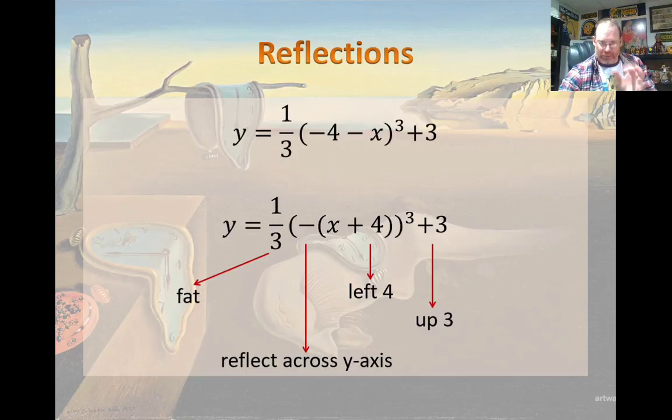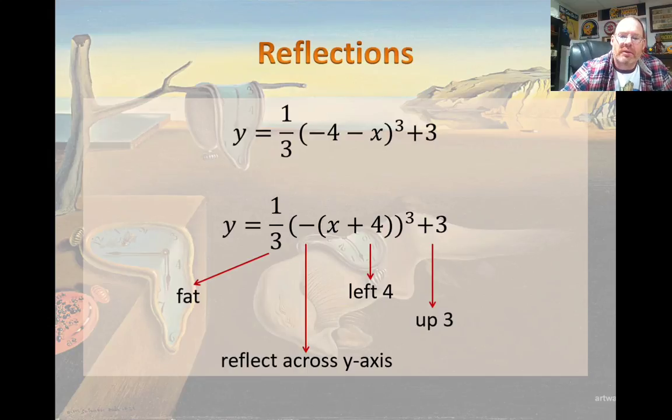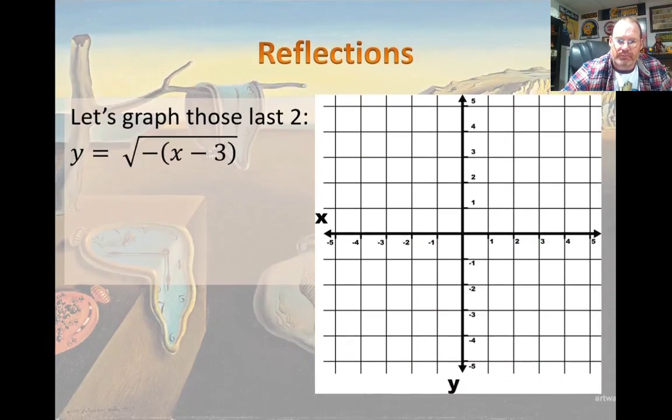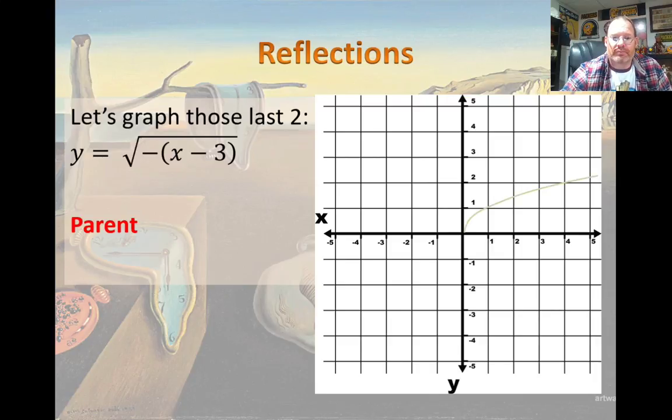So we just did an example of rearranging that negative sign on two equations. Let's go back to that radical one and graph it. So first of all, identify what your parent function is. In this case, it's square root of x. And you can see that in the graph.